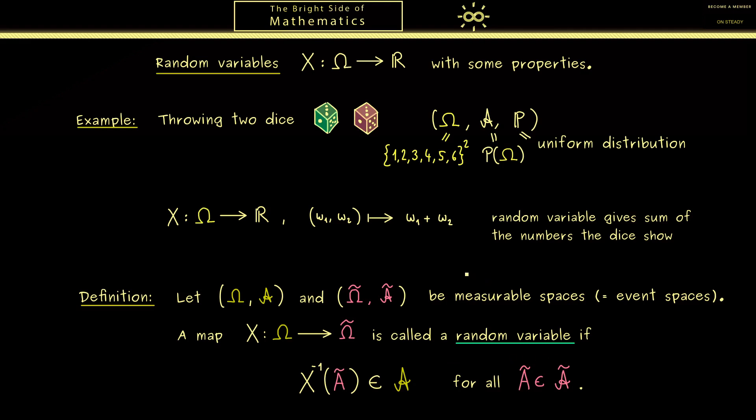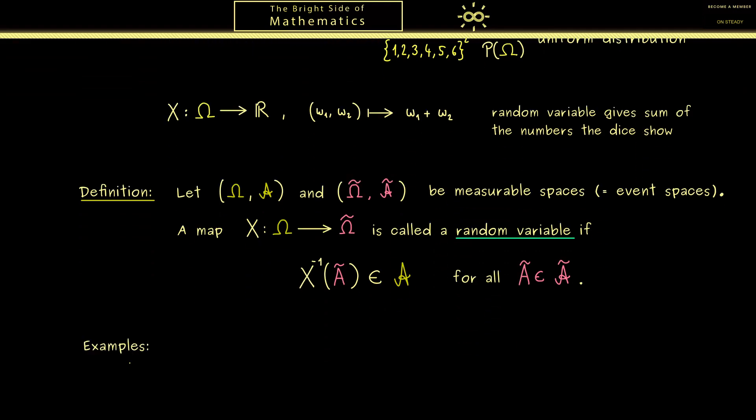Therefore I would say let's immediately look at some examples. So maybe for the start let's discuss the details of the random variable from above. There the first event space was given by (Ω, A), where Ω is the sample space given by {1,2,3,4,5,6}² and A is just the power set. Moreover, the second event space was given by the real number line, hence this would be Ω̃. However, now we should ask what is Ã? In the end I can already tell you it will not matter at all.